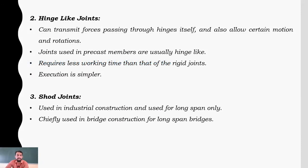Second is the hinge-like joint. A hinge-like joint can transmit force passing through the hinge itself, and also allows certain motion and rotation. Precast members are usually like a hinge only. It requires less working time than rigid joints, and execution is simpler.